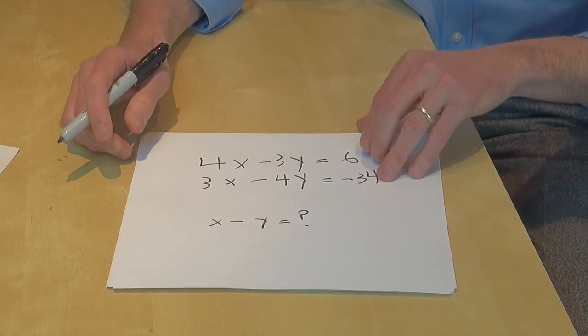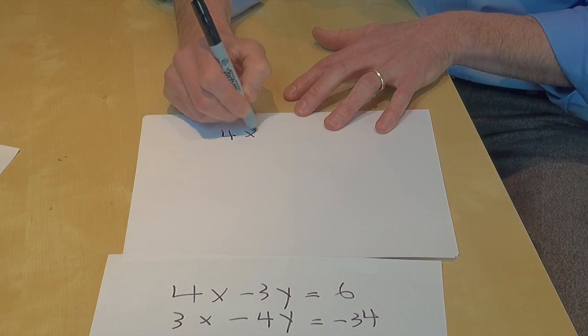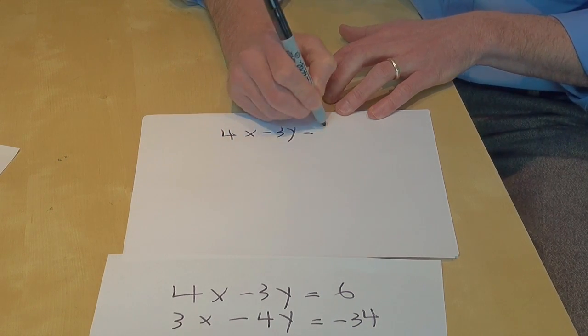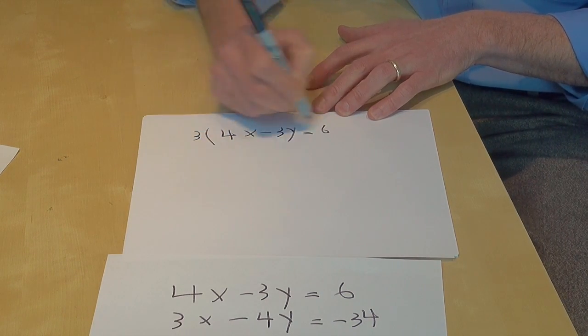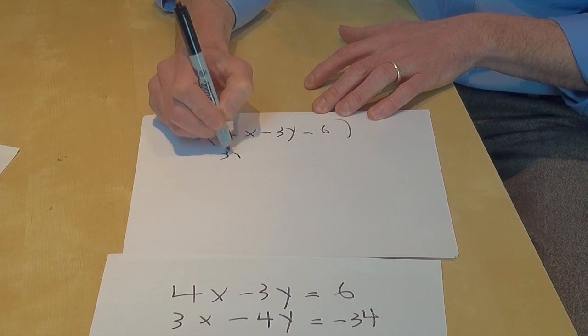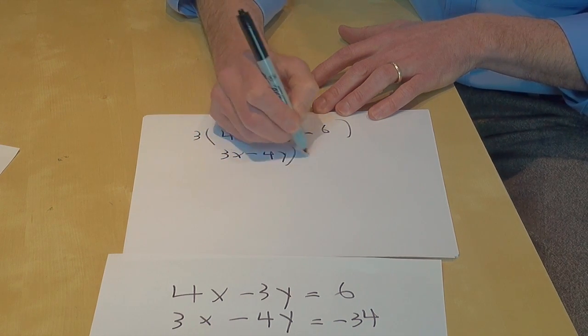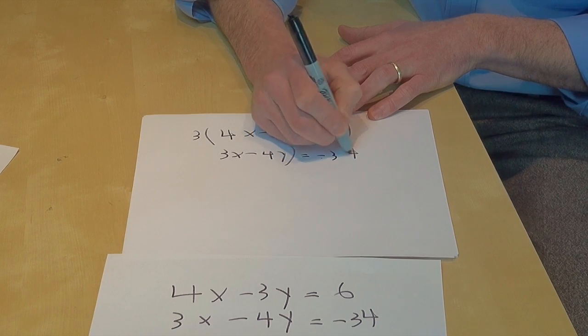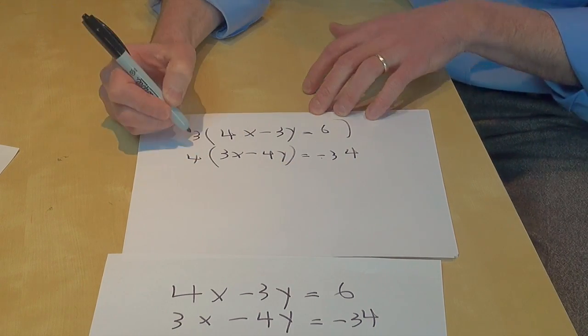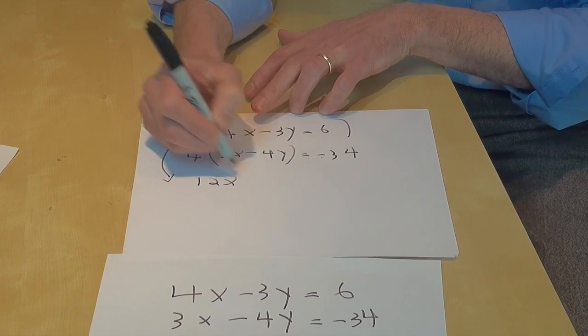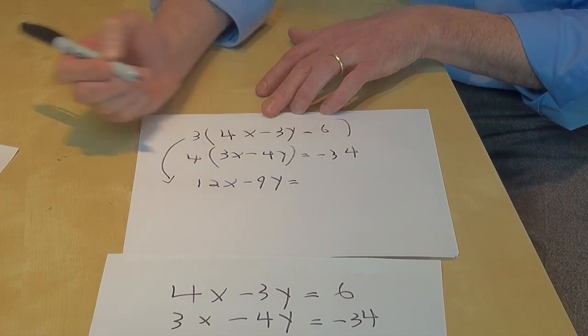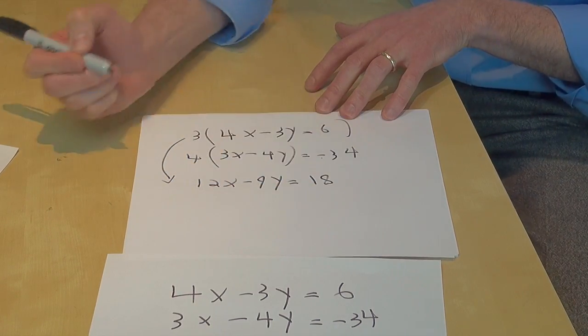So Khan Academy, we'll take this - we will multiply this times 3 and the second one by 4. When we do that, this will come down 12x minus 9y, correct me if I do the math wrong, equals 18.